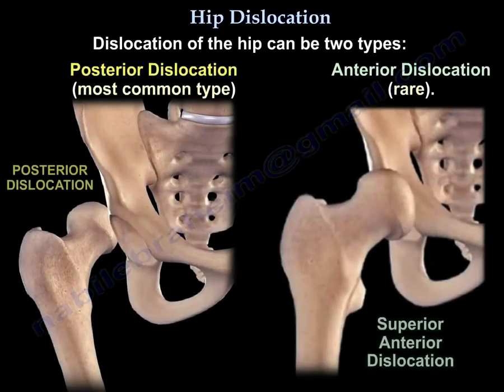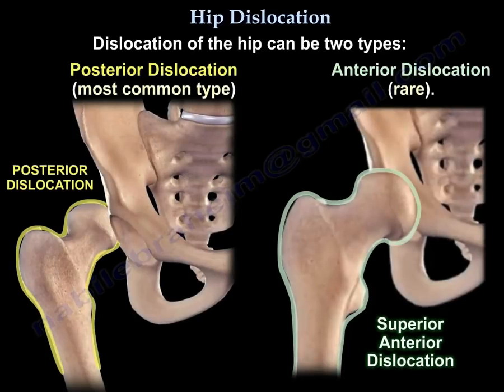Dislocation of the hip can be two types. It can be a posterior dislocation, which is the most common type, or an anterior dislocation, which is rare.